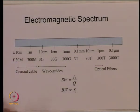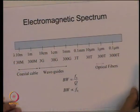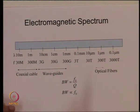Initially, communication started in low frequency bands — in the range of a few kilohertz. Then the frequency was increased to a few megahertz, then a few hundred megahertz, then a few gigahertz and so on. Over the last hundred years or so, the frequency of operation for communication has consistently increased towards the higher end.